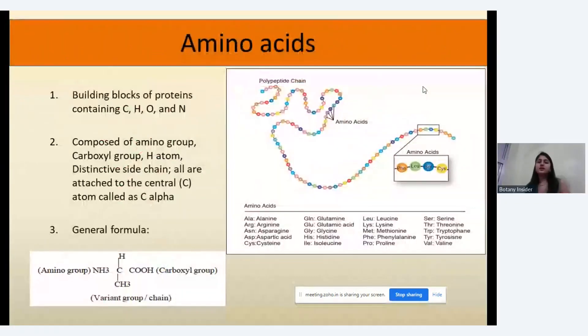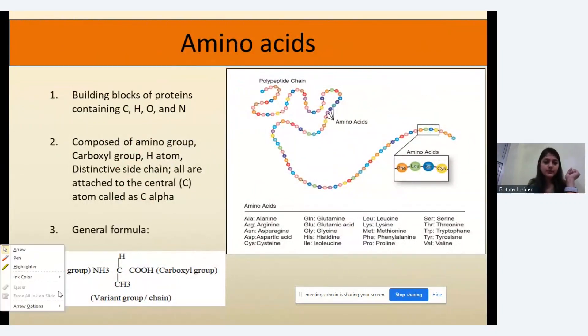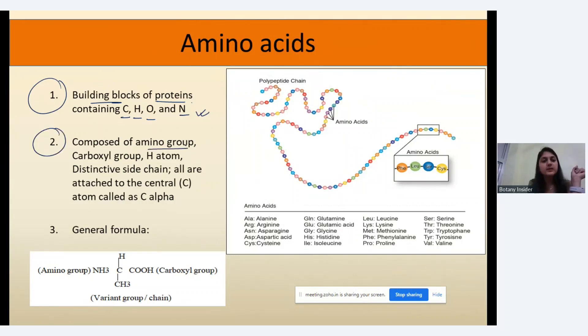Now talking about the amino acids, the very first point we have to remember is that they are the building blocks of protein and contain carbon, hydrogen, oxygen, and nitrogen. Next, they are composed of the amino group, carboxyl group, and hydrogen atom.